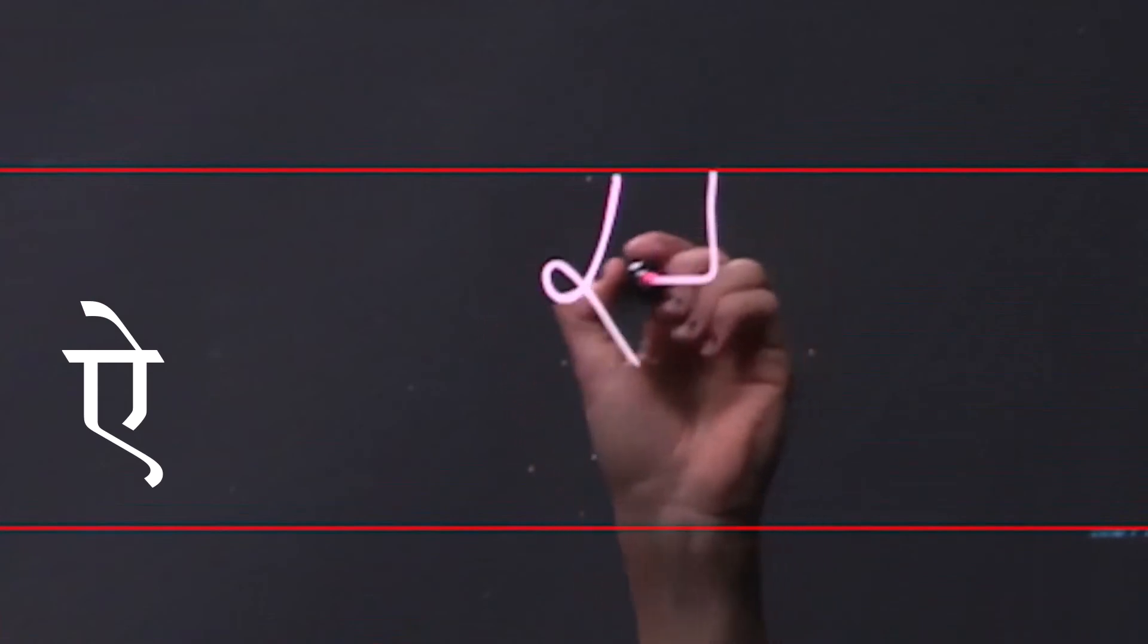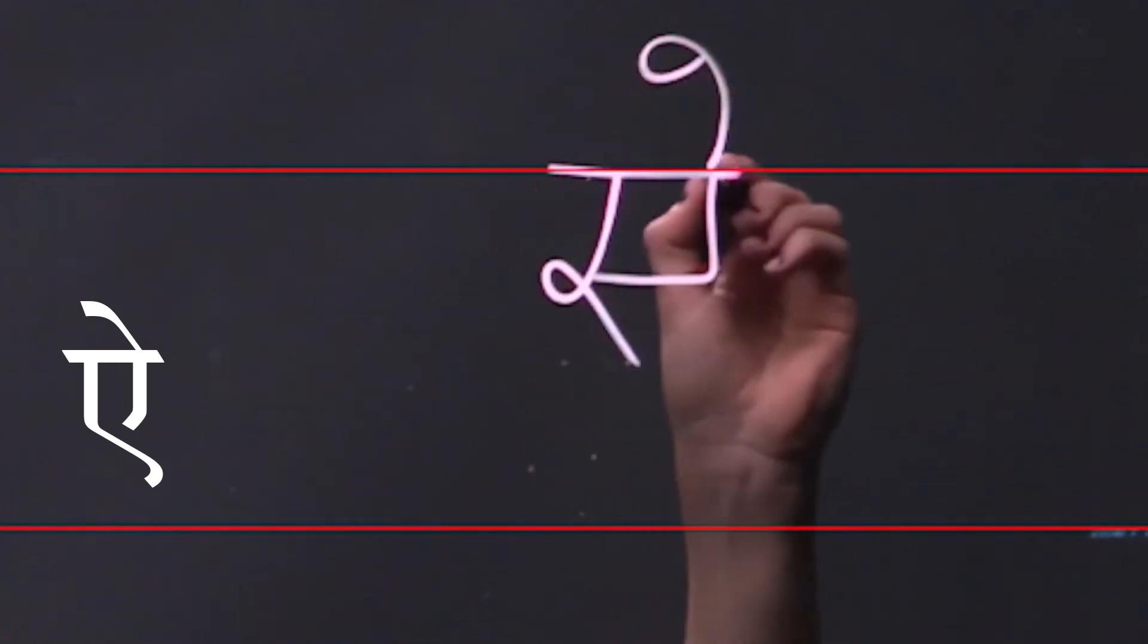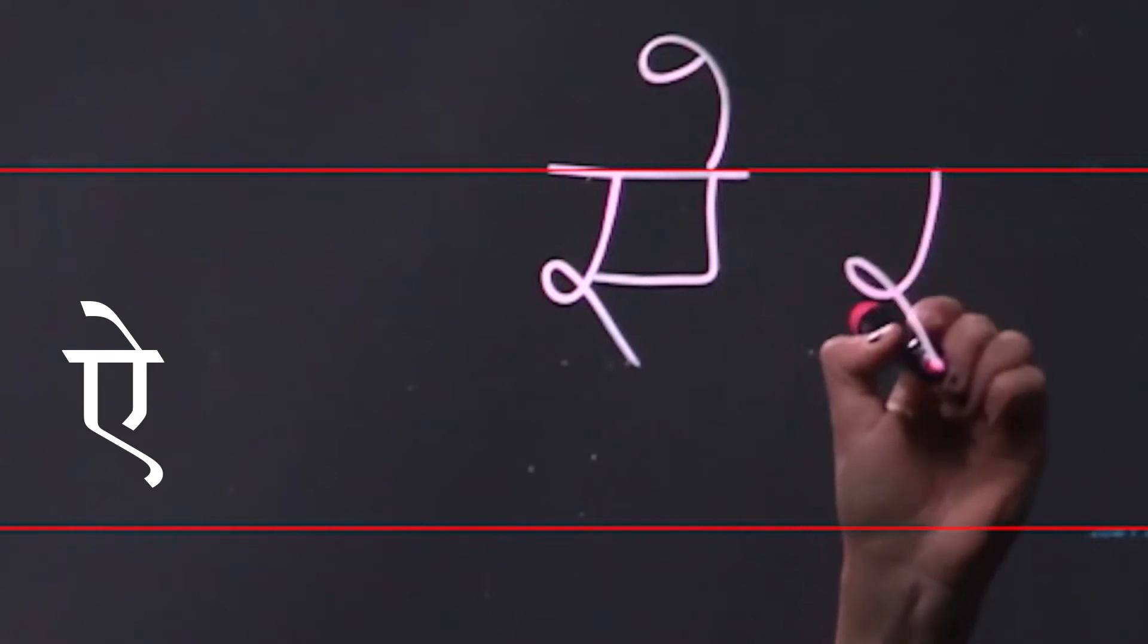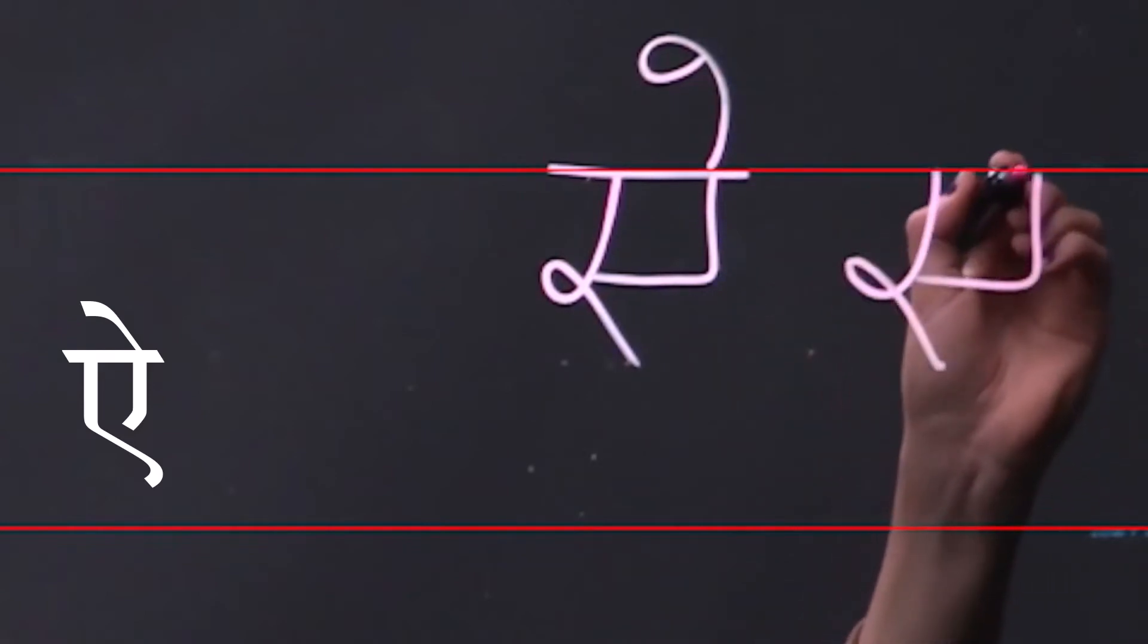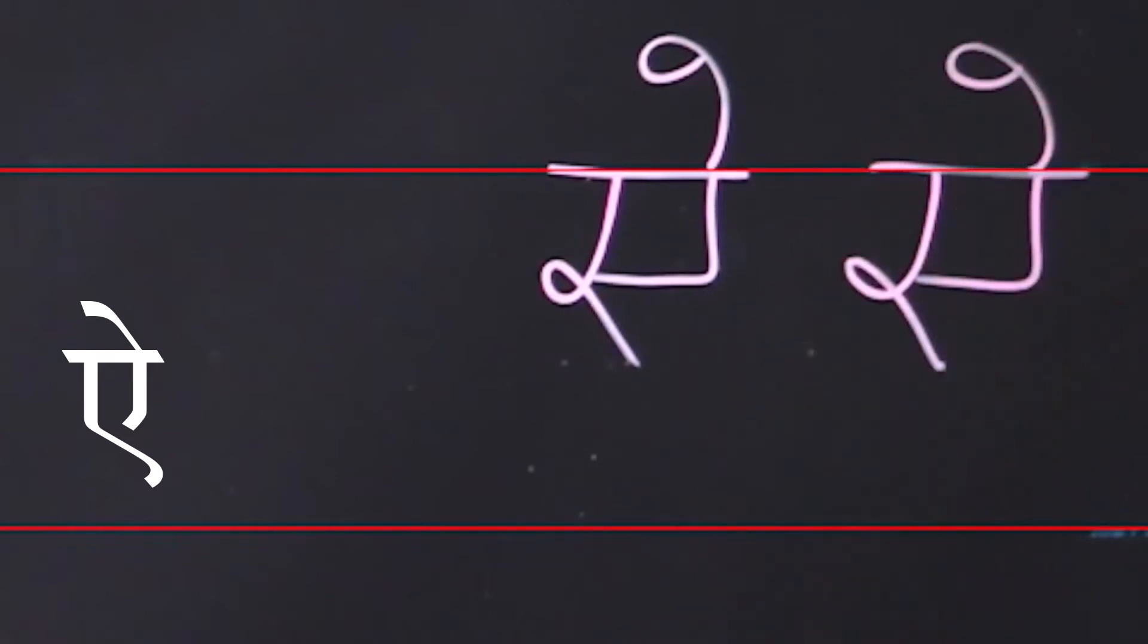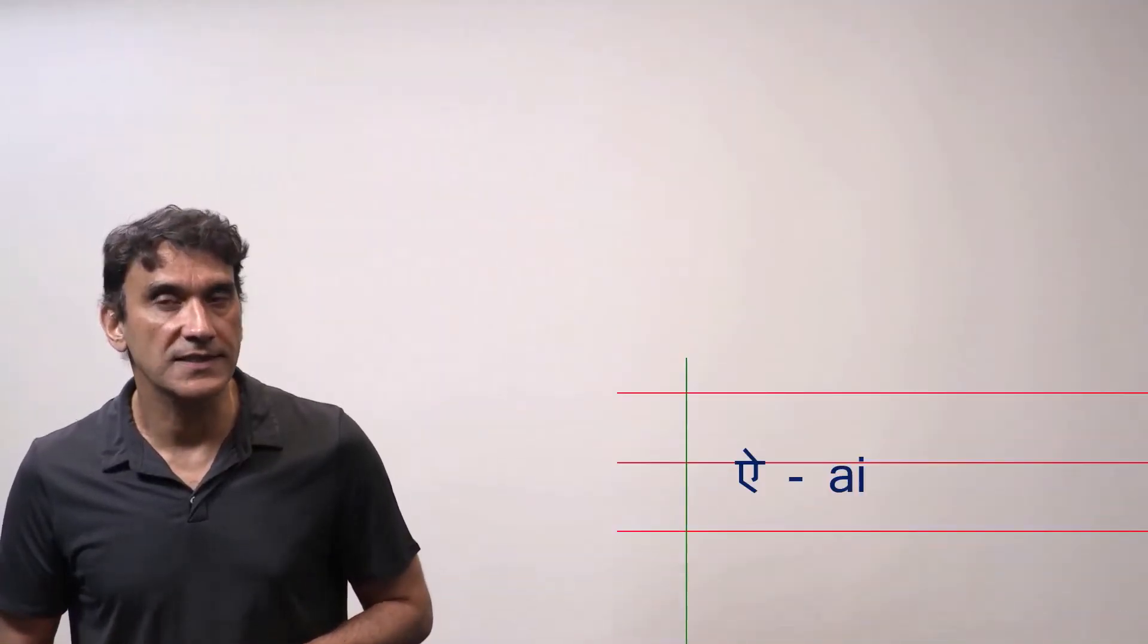It is similar to e with an additional slanted line on the top right corner of the letter. In the handwritten form people often write a small circle on the top of the slanted line. The Roman transliteration is A-I.